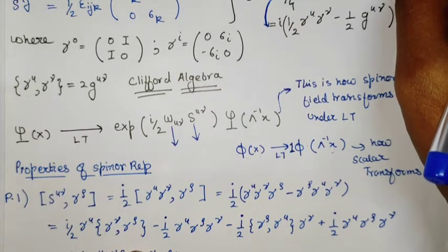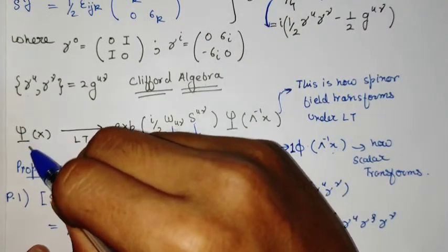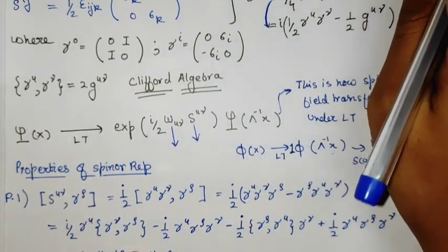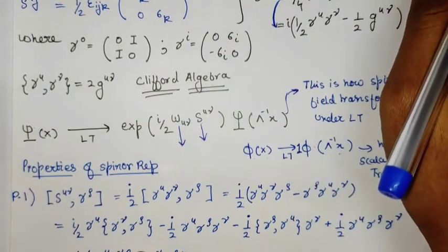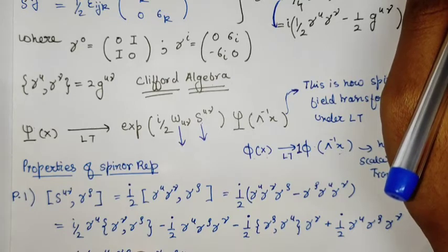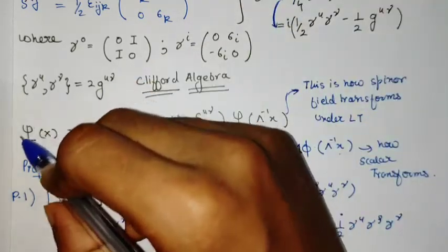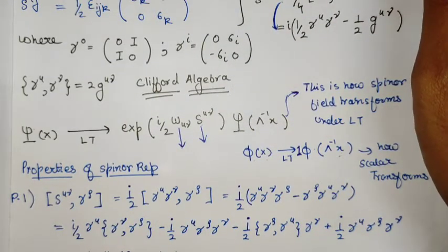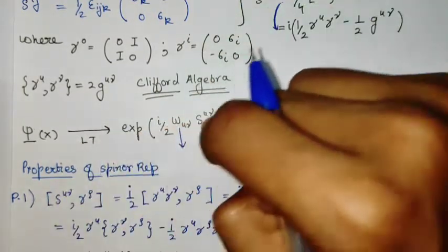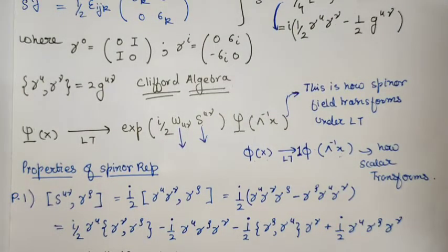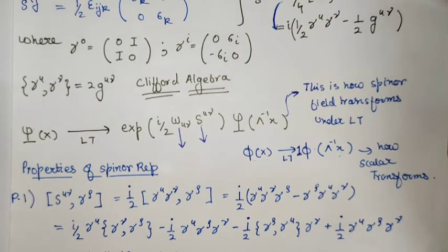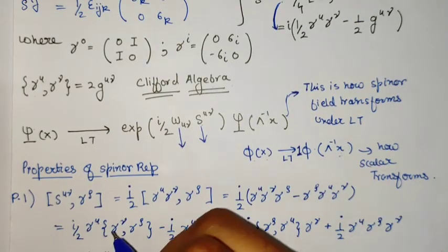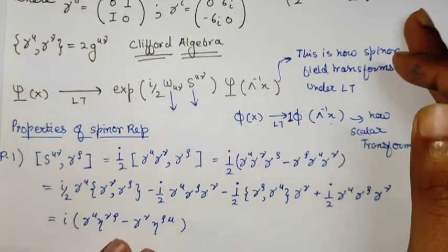One important thing: this object is not a wave function. There is nothing quantum mechanical here, apart from the fact that we can make an analogy with the wave function. We have not used any notion of wave functions — this is completely a group-theoretical viewpoint. With this, we look at some properties of this spinor representation.